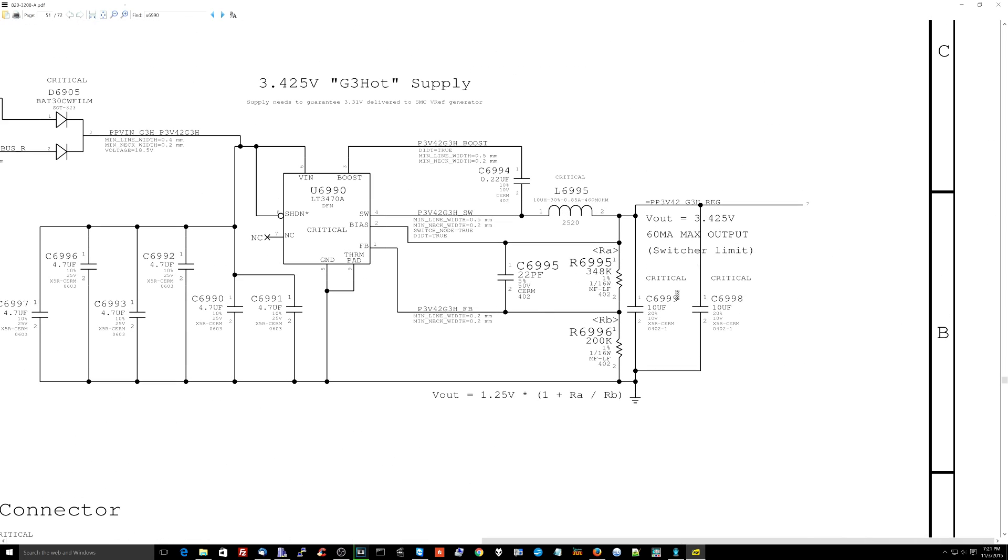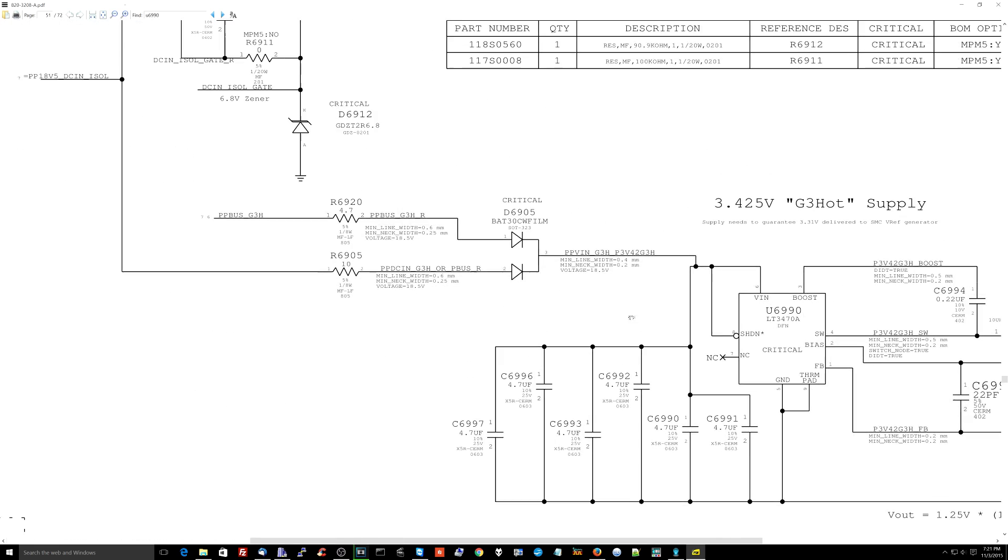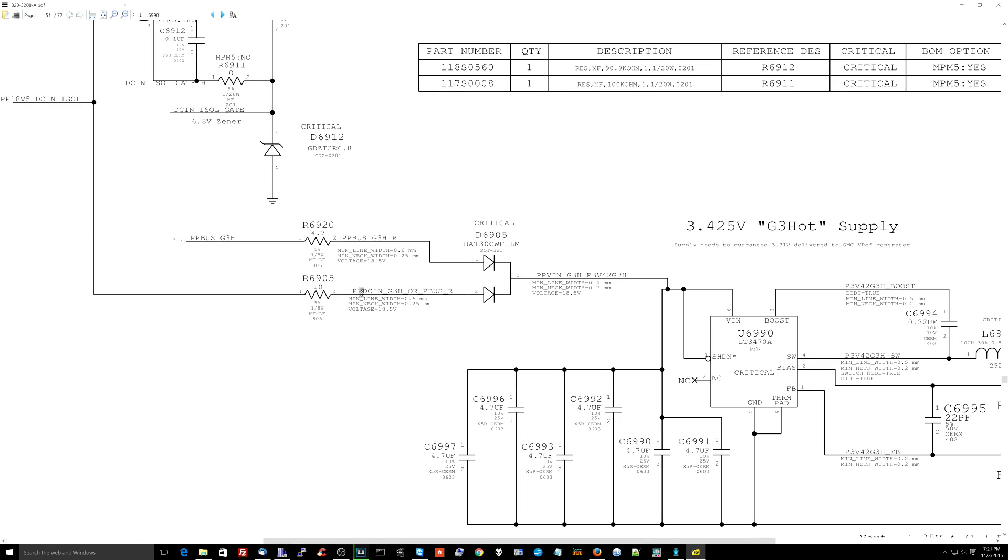What parts of the machine are powered differently from the battery than off of the charger? The answer is going to be the PP3V42 circuit. This circuit turns on off of PPDCN for the charger. But what if you're turning it on using the battery? The battery's power is created from PPBUS_G3HOT.